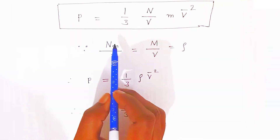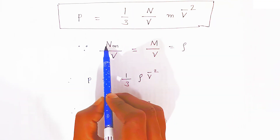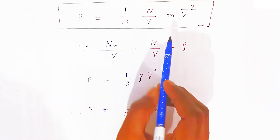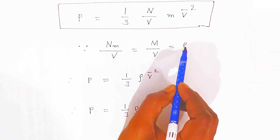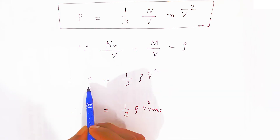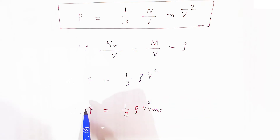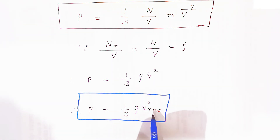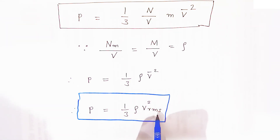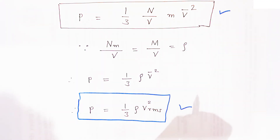Since pressure P = (1/3) × (n/V) × m × V̄², and n times m divided by volume is nothing but density — mass divided by volume equals density rho — the pressure can also be written as P = (1/3) × rho × V²rms, where Vrms is the root mean square velocity. These two expressions are very important for the examination.